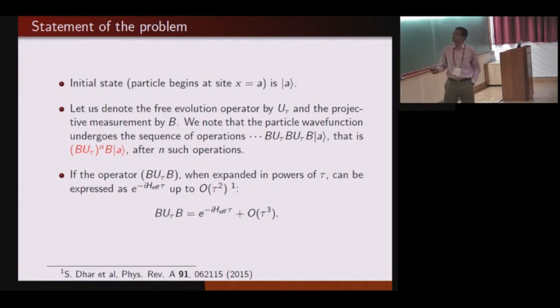The initial particle is at A. There are a series of operations applied to this particle. First is this projection operator B. The detector is measuring whether the particle has reached. Then, in between two projection operators, there is a unitary evolution. And then again there is a projection operator B, then again a unitary evolution, and so on.